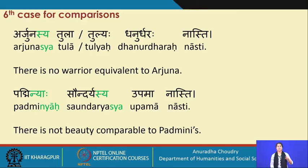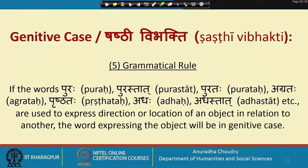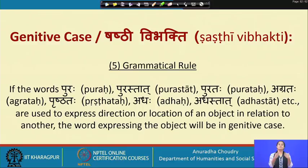The fifth grammatical rule: if words expressing direction or location are used — puraha, purastat, purataha, agrataha meaning 'in front'; prishtataha meaning 'behind'; adhah or adhastat meaning 'down'; vamataha meaning 'left'; dakshinataha meaning 'right'; upari meaning 'top'; antah meaning 'inside' — the word expressing the object in relation to which the direction is given will be in the genitive case.